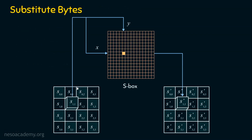Let's focus on the first transformation: substitute bytes or sub bytes. This is merely a lookup table. We have an input state array and a 16×16 S-box with 16 rows and 16 columns. Every individual cell is replaced by another value — for example, S[0][0] is replaced with S'[0][0], and S[3][3] is replaced with S'[3][3]. All values are substituted by looking up the substitution table at the intersection of the X and Y positions.